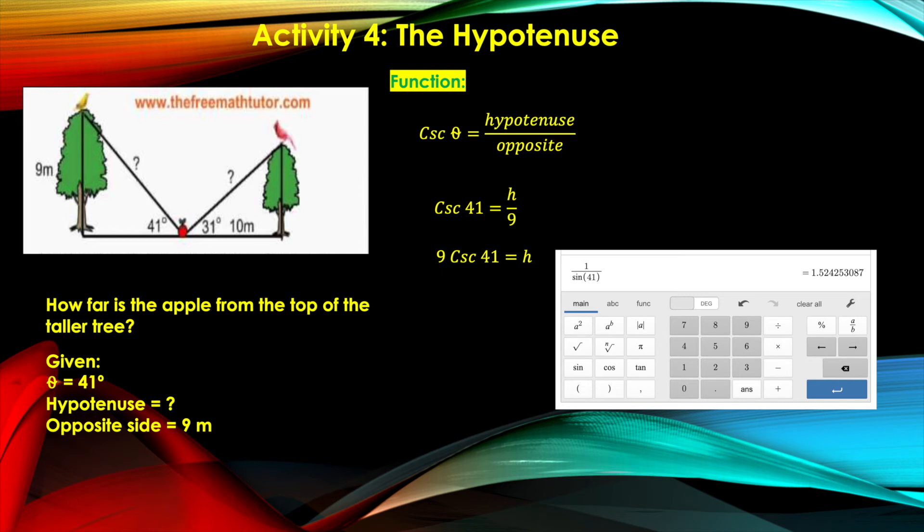That is the value of cosec 41 degrees. I want to get two decimal places here as my value for cosec 41 degrees. So that should be 9 parenthesis 1.52 equals h.